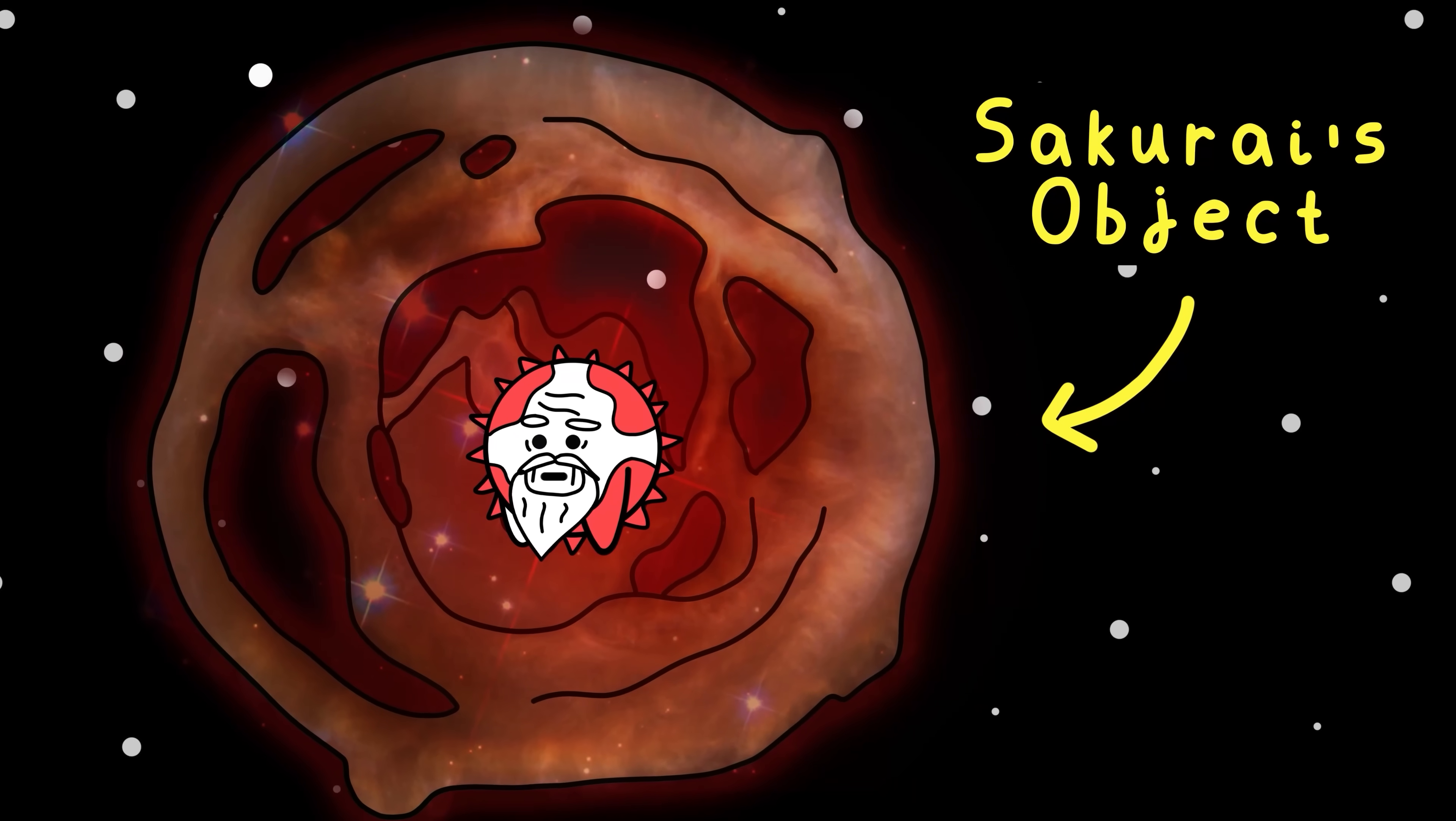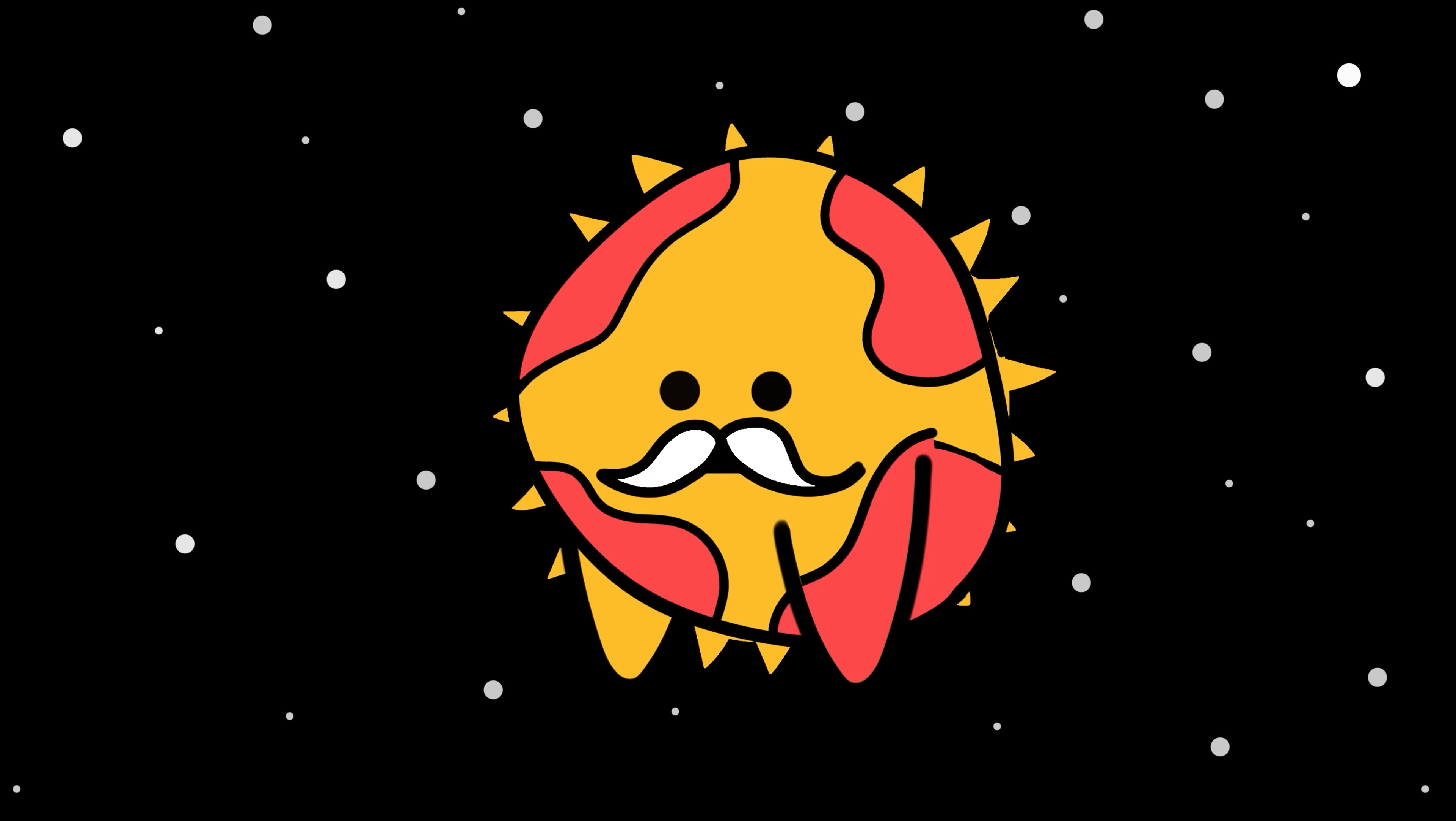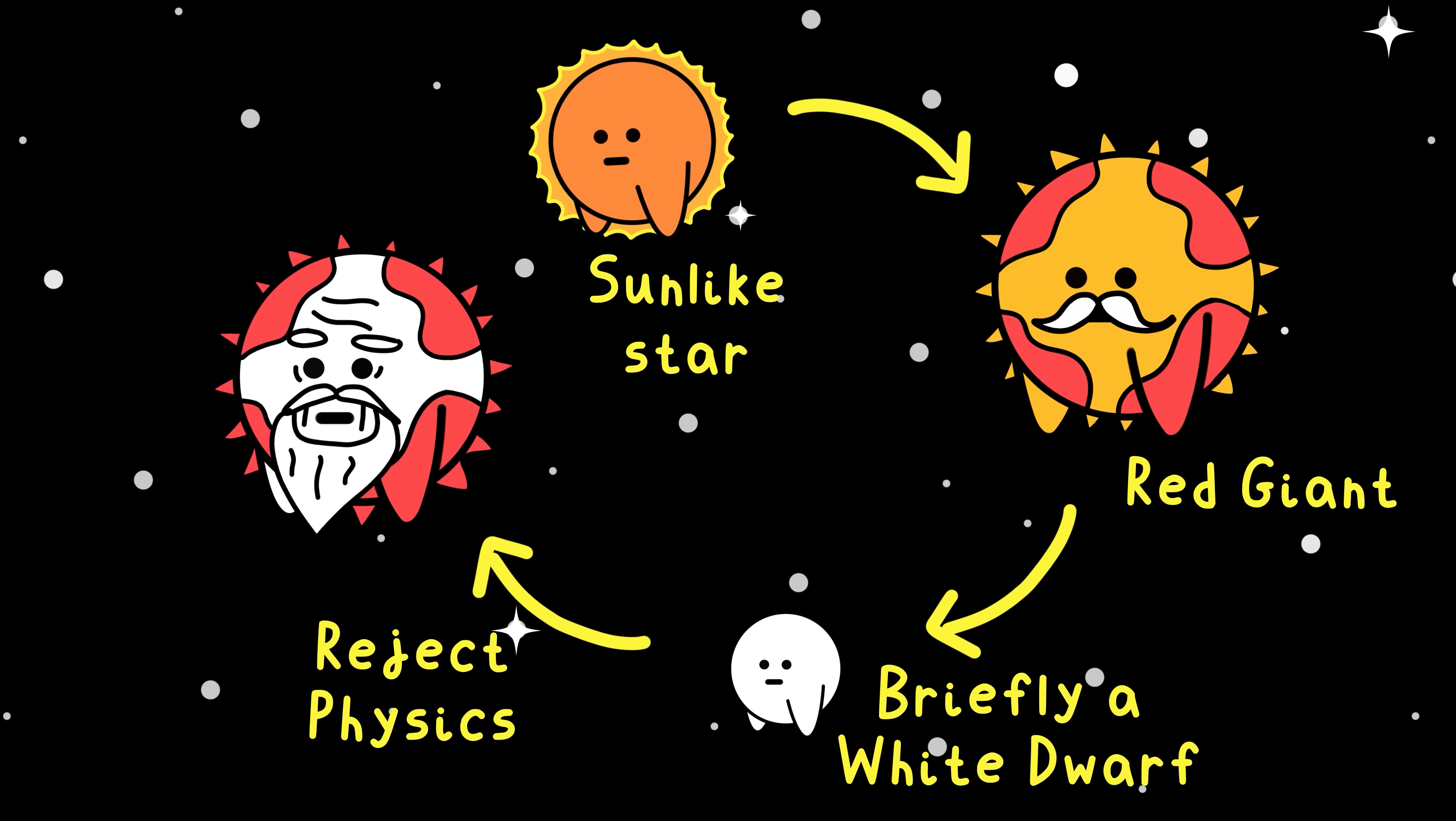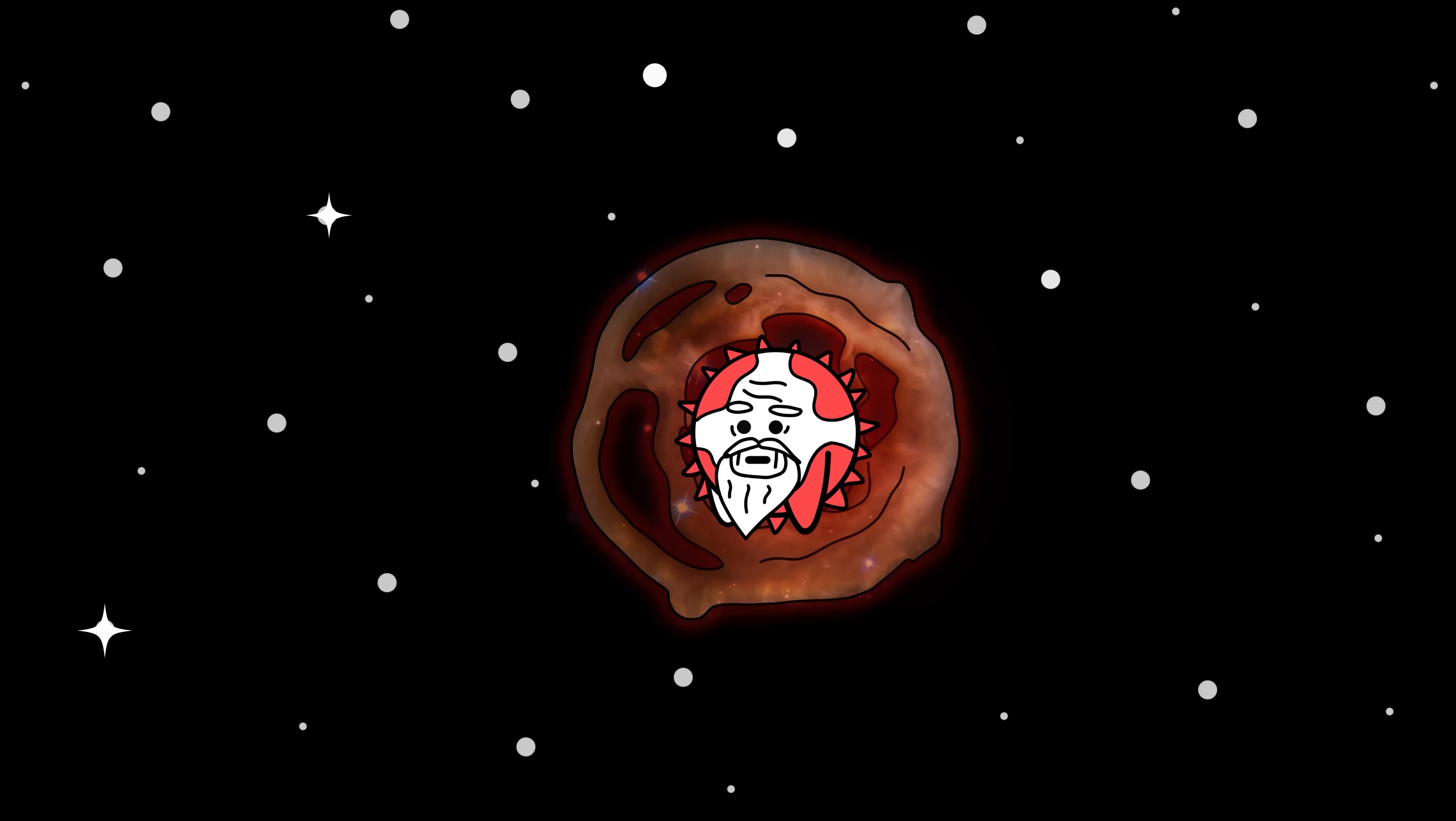Say hello to Sakurai's Object, a dying white dwarf that suddenly said actually no thanks and came back to life. I mean, who's gonna say no to an Earth-sized dead star with the mass of the sun? This thing experienced what's called a very late thermal pulse, which is a final helium flash that made it swell back into a red giant after it was already a red giant that became a white dwarf. Apparently it wanted more.